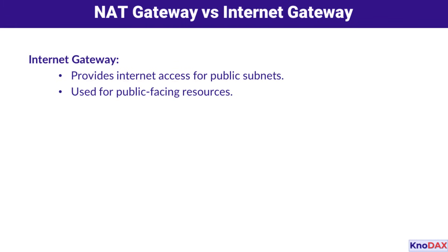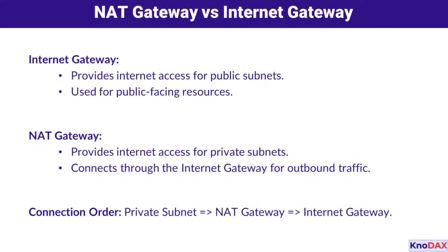You might wonder: how does a NAT gateway differ from an Internet gateway? While both enable Internet access, their roles are distinct. The Internet gateway is for public subnets, handling public-facing resources like websites. On the other hand, the NAT gateway is all about private subnets — outbound traffic flows through the NAT gateway and then the Internet gateway. Think of it as a secure, structured connection path.